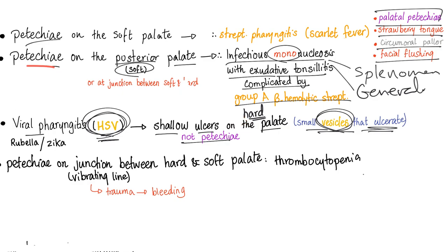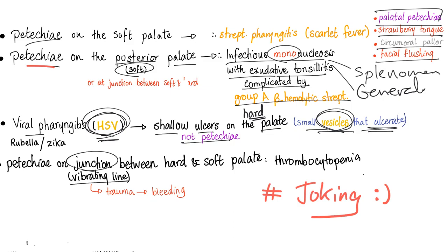That's a very fine distinction in medicine, and if you already know this, you're way ahead of the game. However, you cannot differentiate infectious mononucleosis from herpes simplex by palate exam alone — you still need labs, the rest of the history and physical, and cultures. Petechiae at the junction between the hard and soft palate can be caused by thrombocytopenia, because it's a vibrating line when you speak and more liable to minor trauma, which leads to bleeding and subcutaneous hematoma.